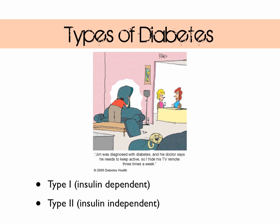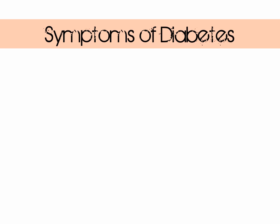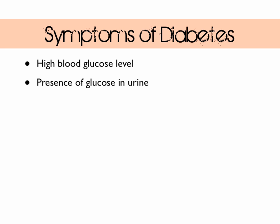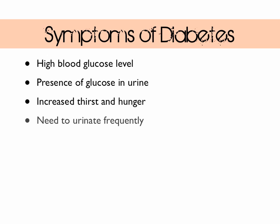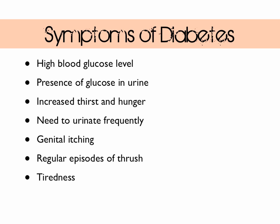The symptoms of diabetes include high blood glucose levels and glucose in the urine — both indicating that glucose is not being absorbed into cells correctly. Further symptoms include increased thirst and hunger, frequent urination, genital itching, regular episodes of thrush, tiredness, weight loss, and blurred vision.